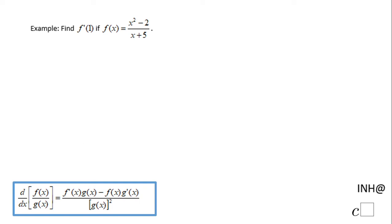Welcome or welcome back. In this example we need to find f prime of 1, the derivative of the function f of x at 1, if f of x is x squared minus 2 over x plus 5. The function is a quotient, so we're going to use the quotient rule for finding the derivative of f of x.